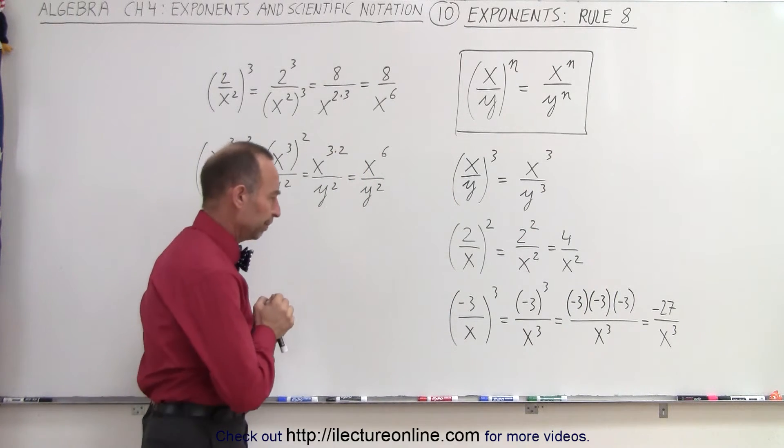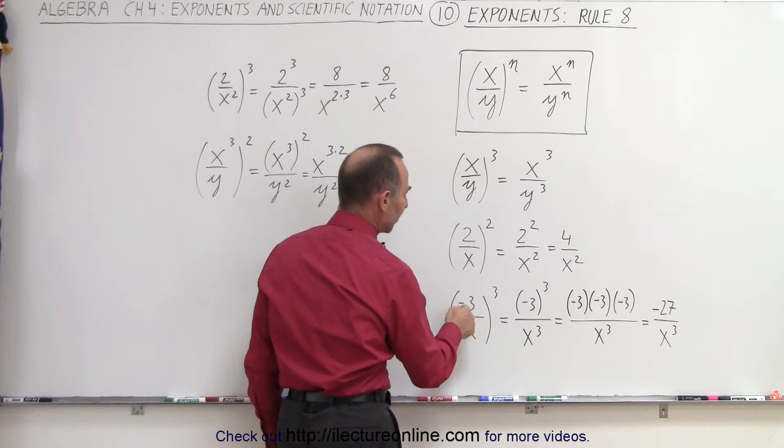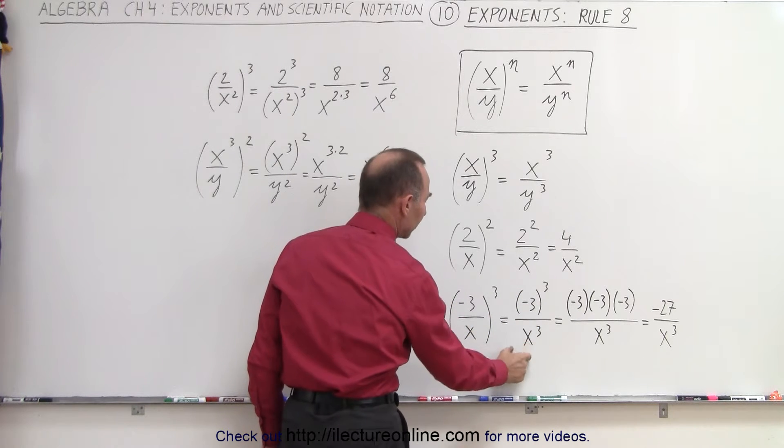What if we have a negative number? Negative 3 over x raised to the third power. Well, we realize the numerator, that means negative 3 quantity cubed, divided by the denominator, x quantity cubed.